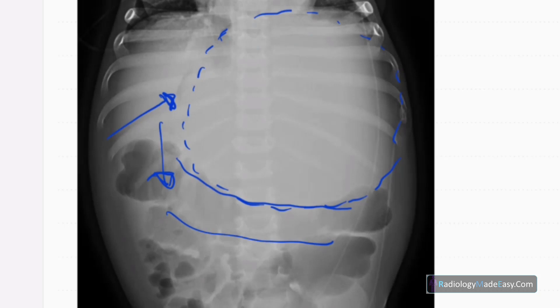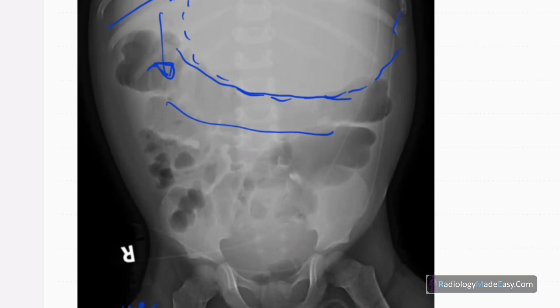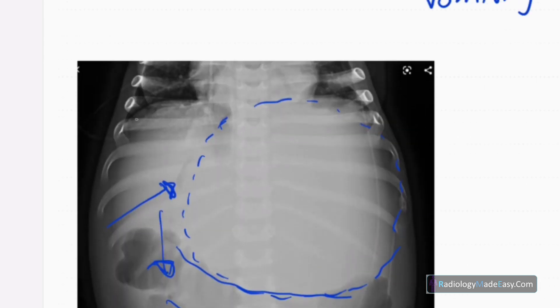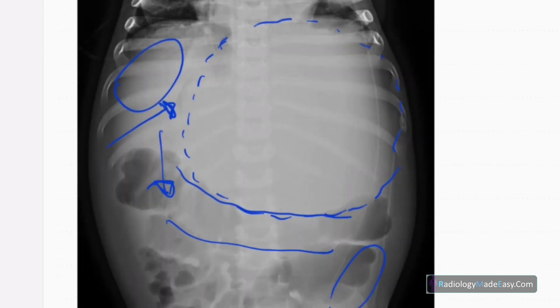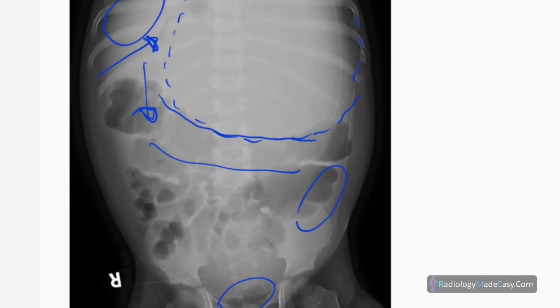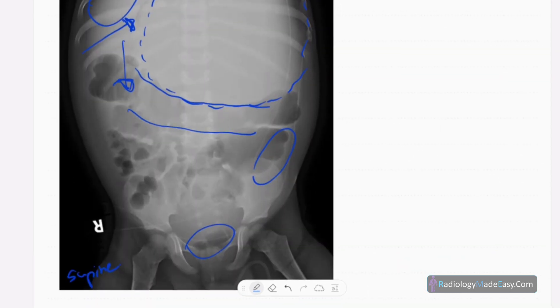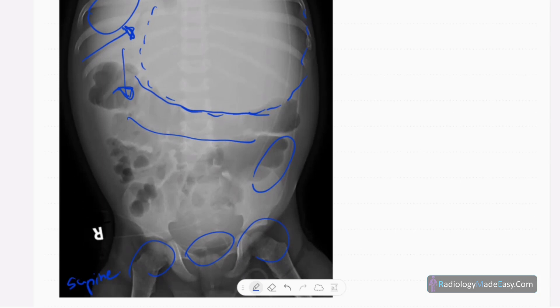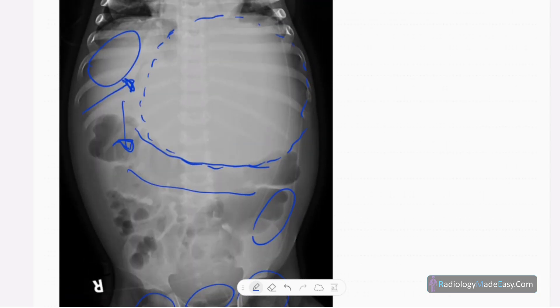However, rectal gas is seen, so there is no bowel obstruction, no intramural gas, no free gas or pneumoperitoneum, no portal venous gas. And you have to see the bones to find out metastasis. So there are no lytic or sclerotic lesions in the visualized bones. Hips are normal and no spina bifida. Vertebral column appears normal and also you don't see high density areas within to suggest calcifications.